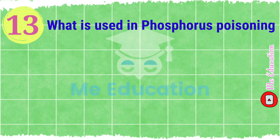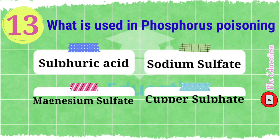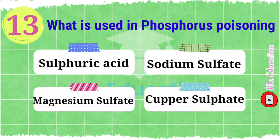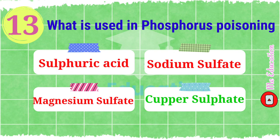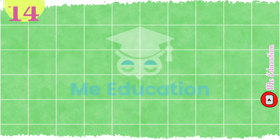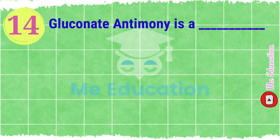Question number thirteen: what is used in phosphorus poisoning? Options: A) sulfuric acid, B) sodium sulfate, C) magnesium sulfate, D) copper sulfate. The right answer is option D, copper sulfate.